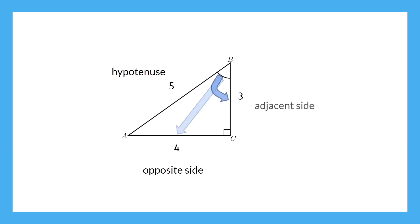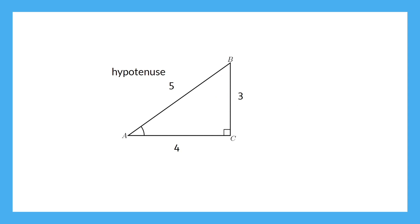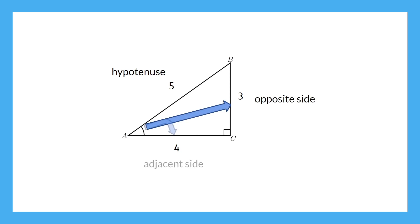The adjacent side is one of the sides that creates the angle. The other side used to create the angle, of course, was the hypotenuse. Now let's rewind and use angle A as our reference angle. The hypotenuse doesn't change, but now the opposite side has moved, and so has the adjacent side.